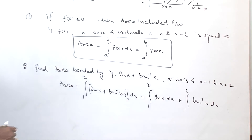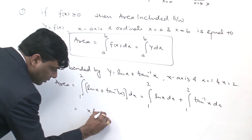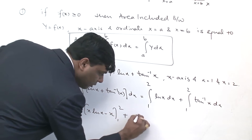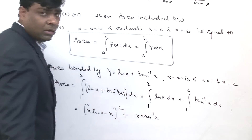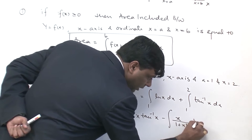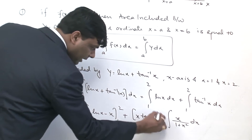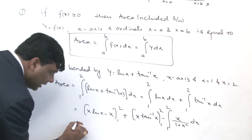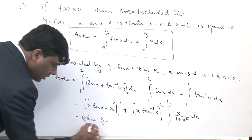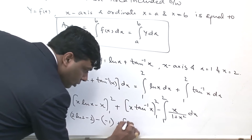So, that will be equal to [x ln(x) − x] from limit 1 to 2, plus [x tan⁻¹(x) − integral of x/(1 + x²) dx]. We can say that the area is equal to 2 ln(2) − 2 − (0 − 1) plus 2 tan⁻¹(2) and continuing to evaluate.